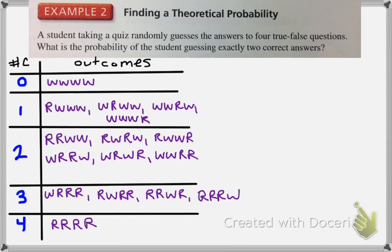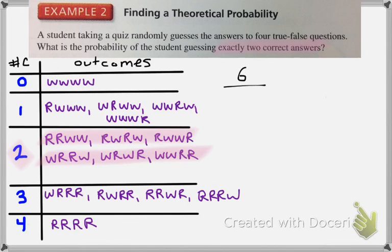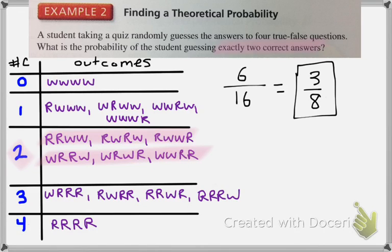So to find the theoretical probability, we find the number of favorable outcomes. Favorable outcomes in this case are when the student guesses exactly two correct, so there are six favorable outcomes. We put that over the total number of outcomes — if you add up all the outcomes listed, there are 16 of them. So that gives us a 6 over 16, or 3 over 8 probability that the student will answer exactly two correctly.